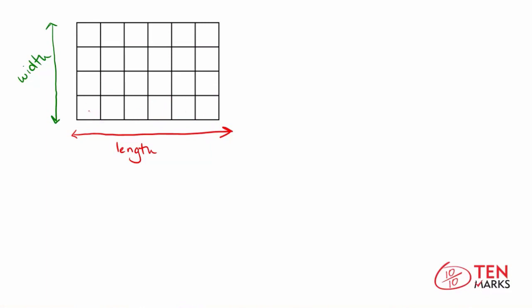So let's take a look at the length. There are one, two, three, four, five, six squares, and we'll call these units. There are six units in the length. So the length is six.